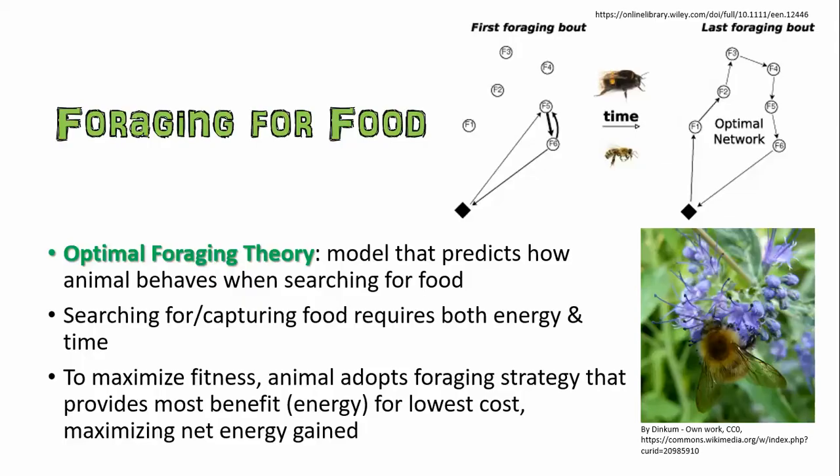Another thing that organisms learn to do is forage for food. There's a model called optimal foraging theory that can predict how an organism will move around when searching for food in a way that minimizes the energy used while maximizing the amount of food obtained. To maximize its fitness, an animal will forage in the way that provides it the most benefit. You can actually see this when you look at insects foraging — they'll try different strategies and eventually work on one that costs them the least energy and lets them exploit the resource as efficiently as possible.